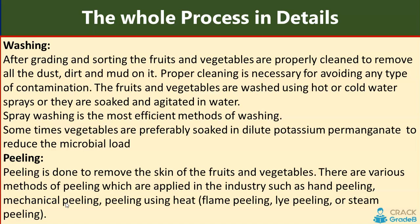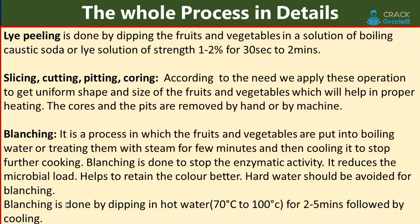Peeling is done to remove the skin of fruits and vegetables. Various methods are used in industry: hand peeling, mechanical peeling, and peeling using heat such as flame peeling, lye peeling, or steam peeling. Lye peeling is done by dipping fruits and vegetables in a boiling caustic soda solution of 1–2% strength for 30 seconds to 2 minutes.